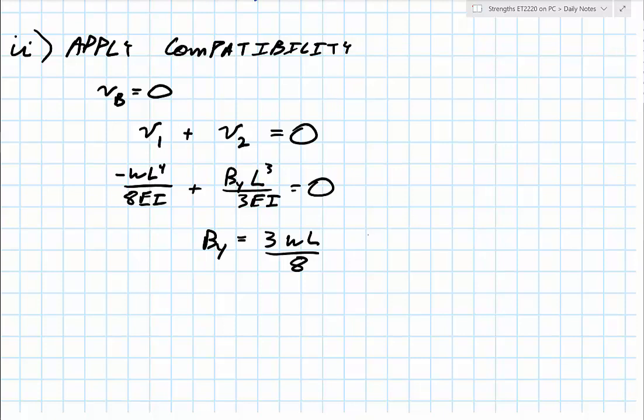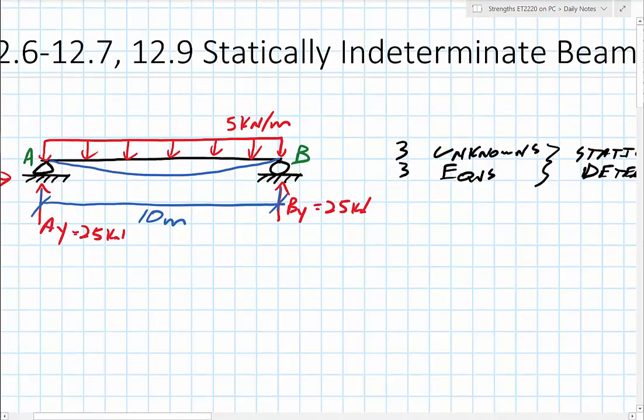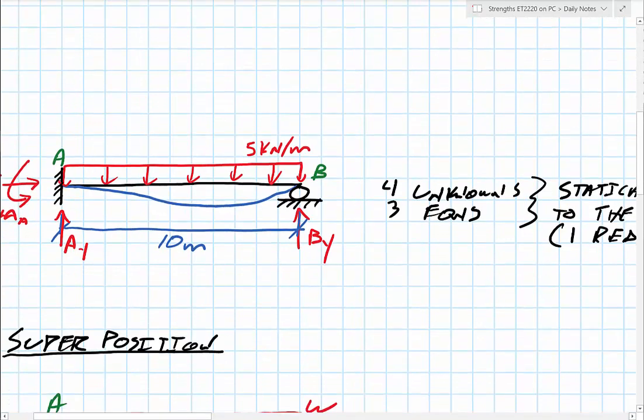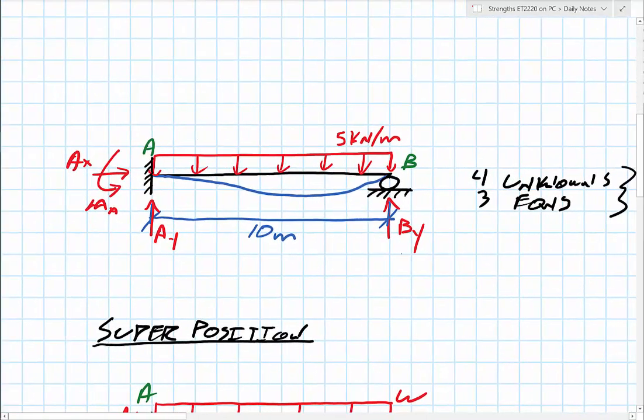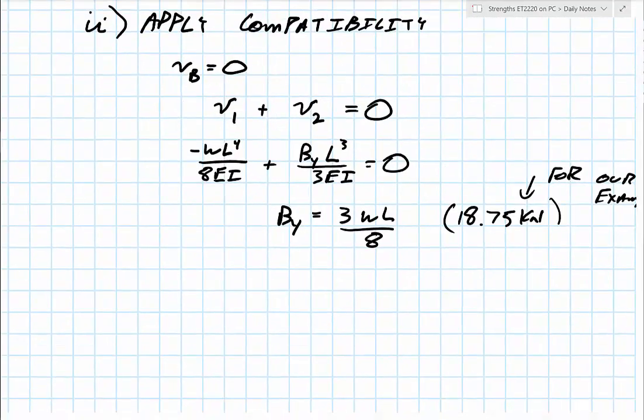So by the way, for our example up top, if I had to plug this in, I would end up with 18.75 kilonewtons. So of course, what we said, if it was symmetric, we would have 25. So it is less. And hopefully you got that. The reason it would be less, by the way, is if this moment is actually there, you can imagine that moment twisting this beam and taking some of the load off of B. That's why B takes less. And of course, A would take the rest.